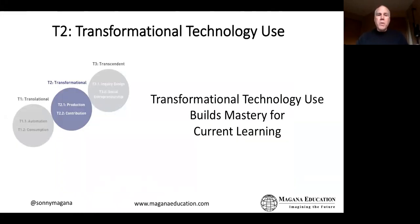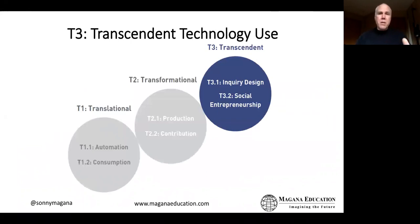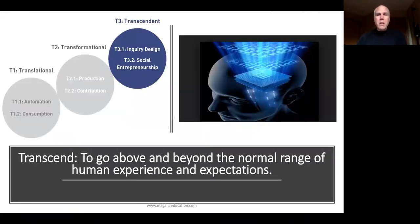Transformational technologies—production and contribution—represent six strategies that you can engage in to build mastery for current learning. But an arguable point of education is to prepare students not only to master current learning but also to master future learning, and we don't know what that looks like yet. That's why I added another domain to the framework called transcendent technologies, which helps students master the skills, habits, and aptitudes necessary for mastering challenging future problems. To transcend literally means to go above and beyond a normal range of experiences.